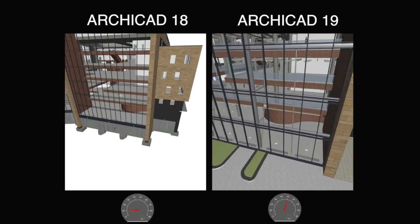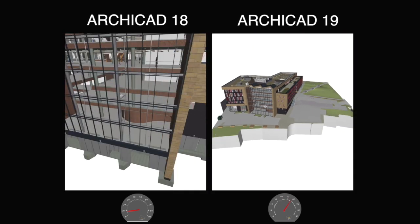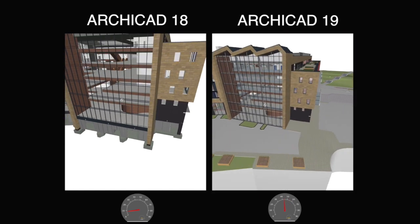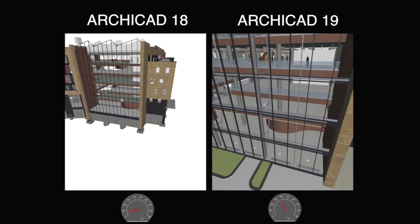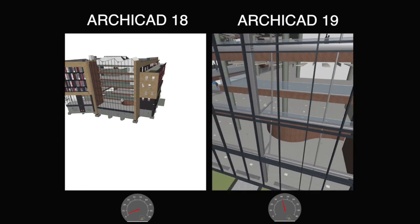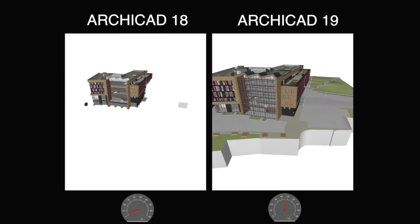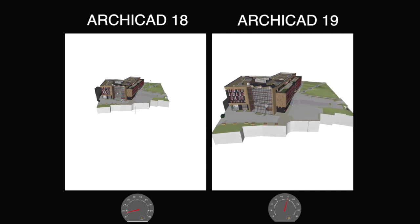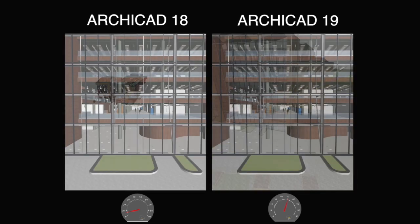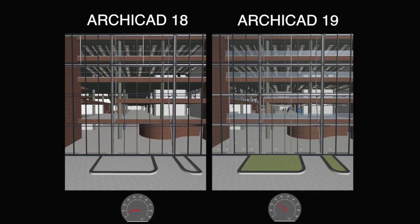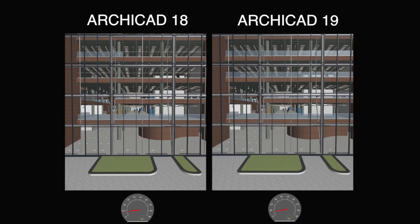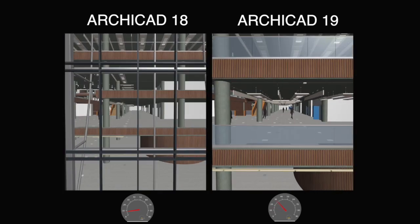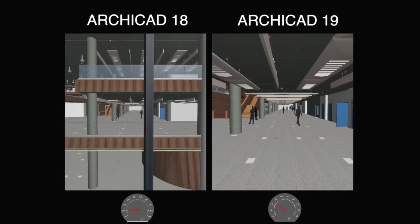Zooming, orbiting and panning operations are also smoother and flicker-free. ARCHICAD 19's optimized OpenGL provides a massive performance enhancement in the field of 3D display and navigation.